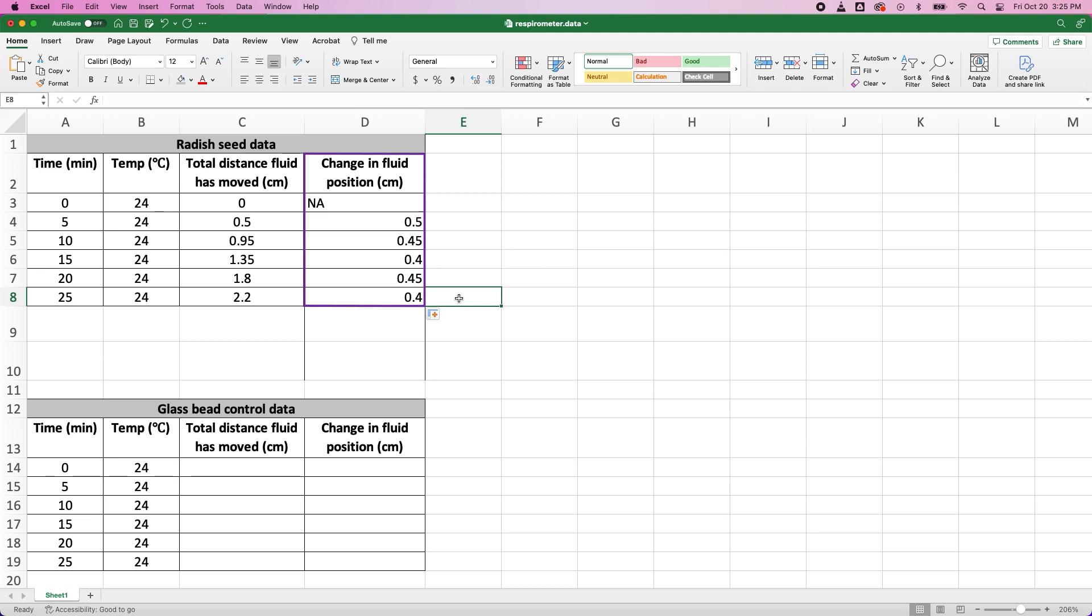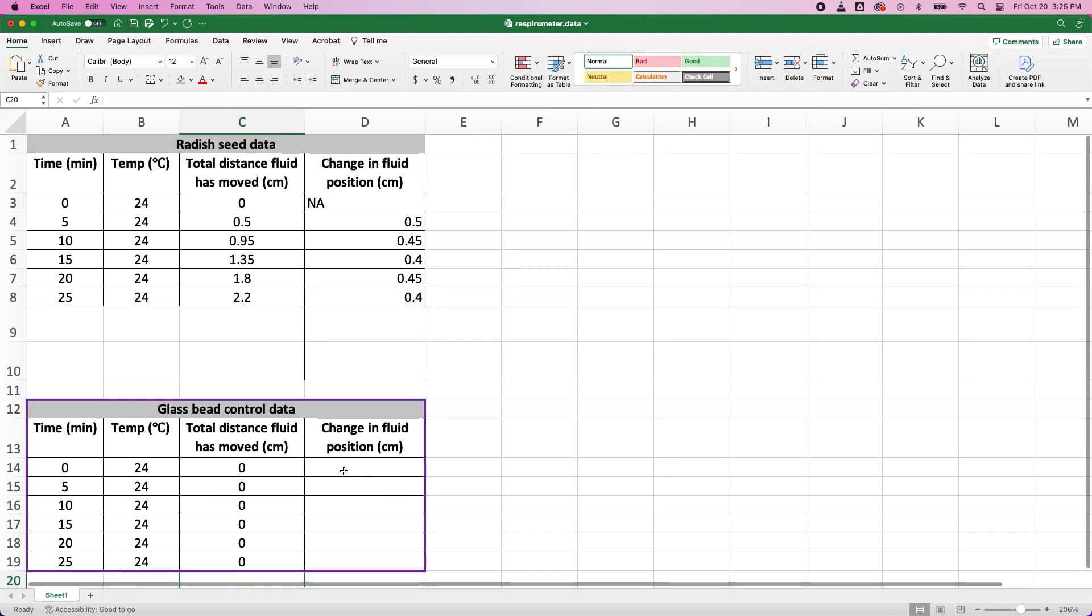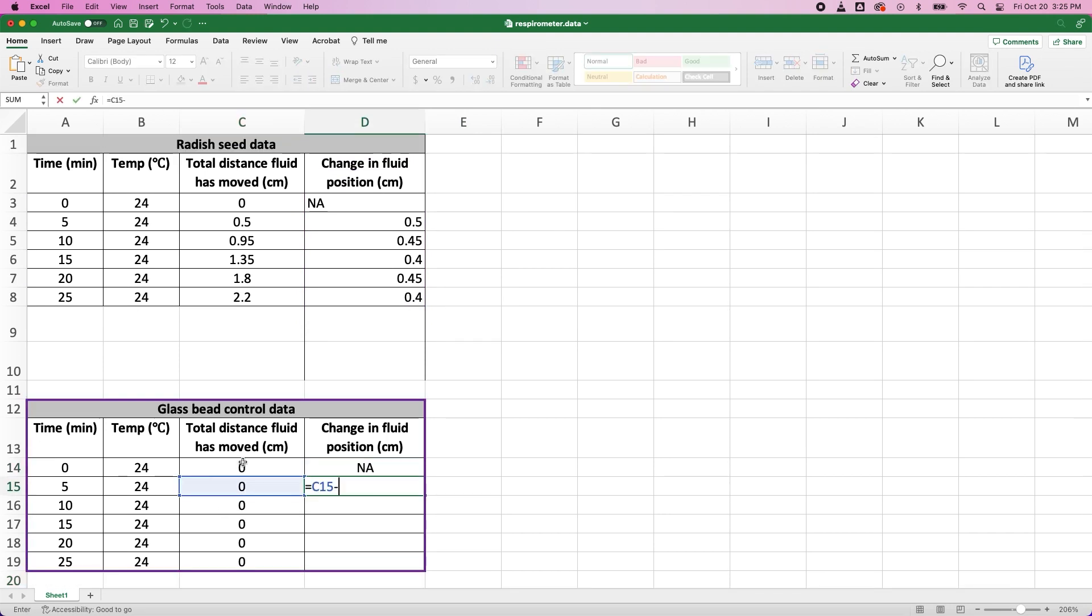If there were any changes in temperature or pressure during the experiment, they would have affected the position of the fluid in the control respirometer. From my control data, I can see that the position remains steady in the control, so I'm all good.